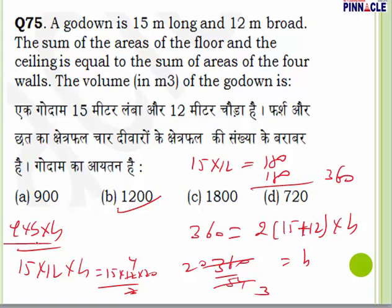In this question, l and b were known and we found h by equating floor+ceiling area to four-walls area, giving h = 20/3. Multiplying l×b×h gives volume = 1200. We have now covered all mathematics questions in this question paper. Thank you very much for watching this presentation. All the best!